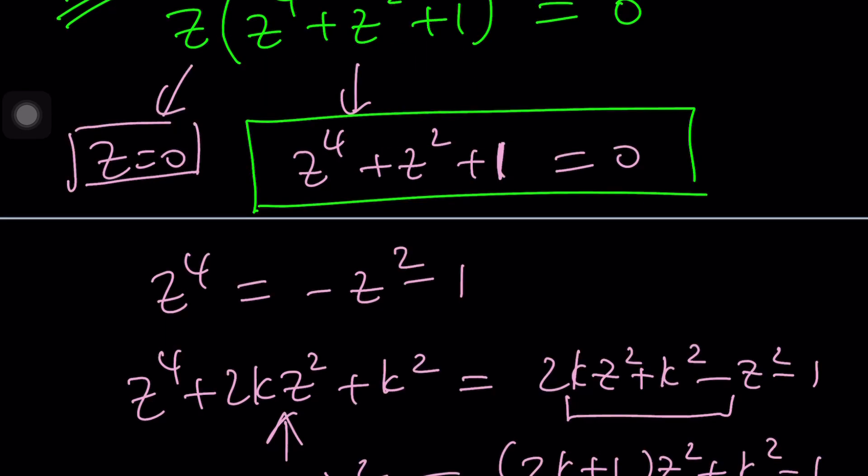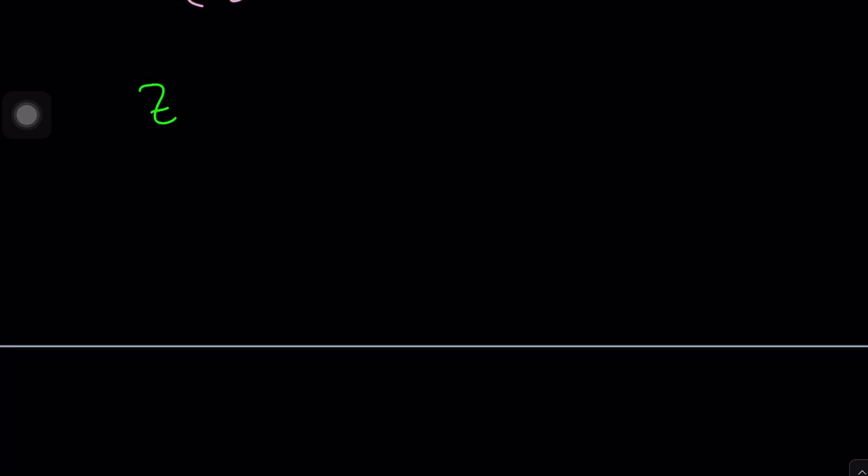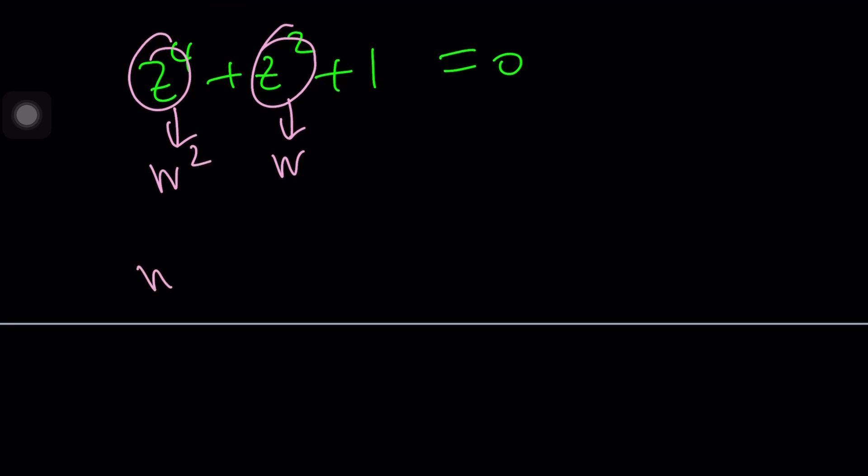Well, that's by quadratic. Remember my comment about it? Z to the fourth plus Z squared plus 1 equals 0. So we can just go ahead and call this W. And this will be W squared. And notice that there is no other Z term. Now we get W squared plus W plus 1 equals 0. Awesome.